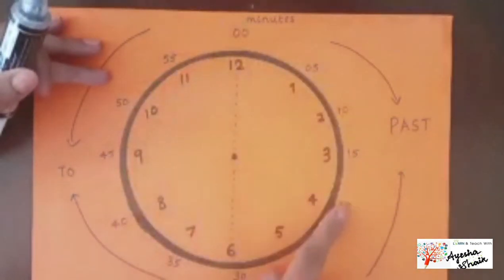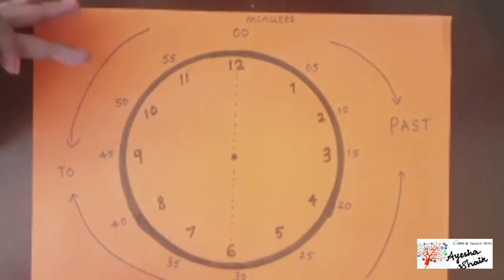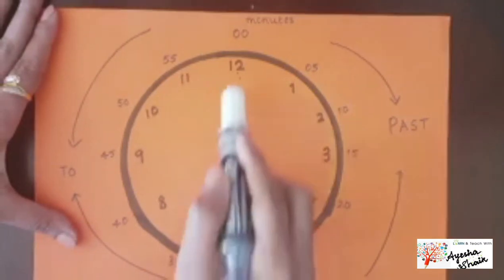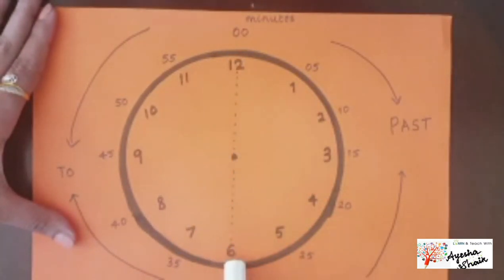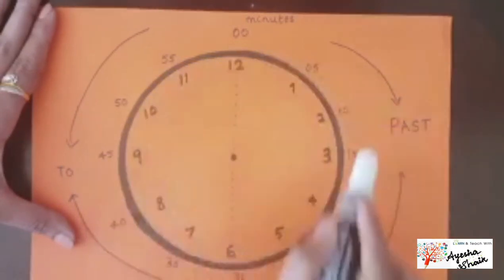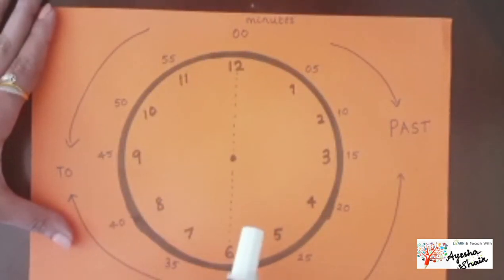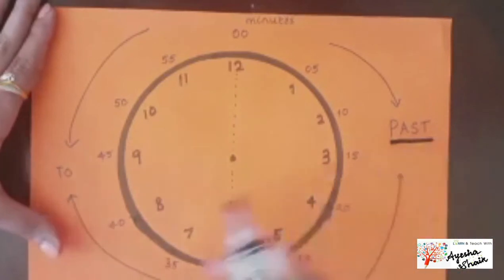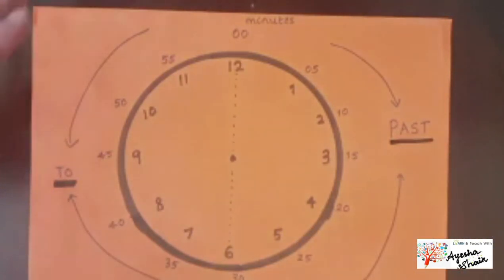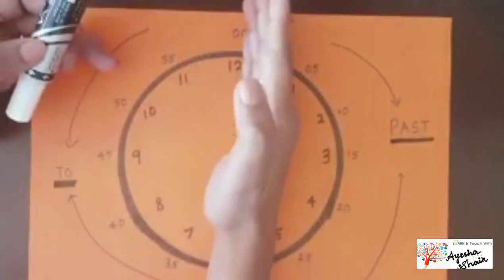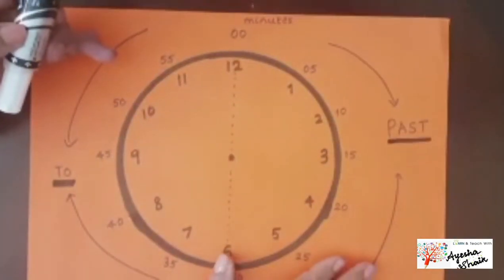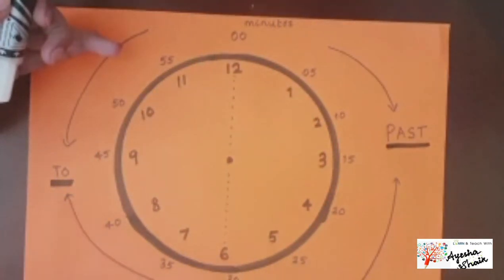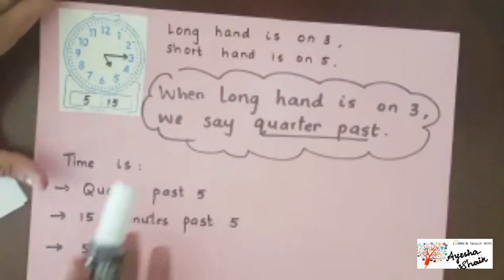There's one more important thing to learn. You can see the clock is divided into two parts by a dotted line down the middle. This divides the clock into two halves. The right side uses the vocabulary 'past', and the left side uses the vocabulary 'to'. I'm going to teach you how we use these now.